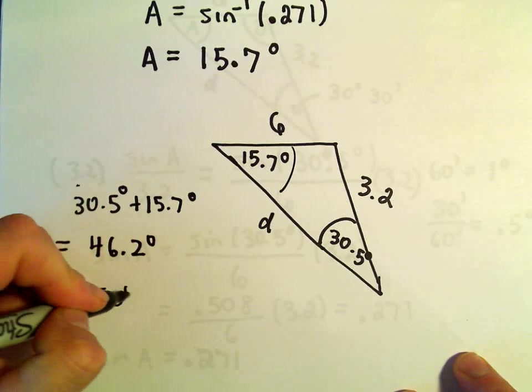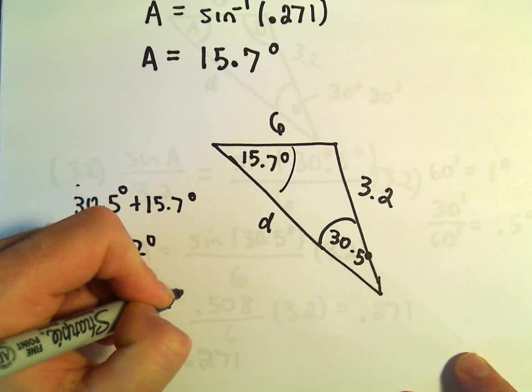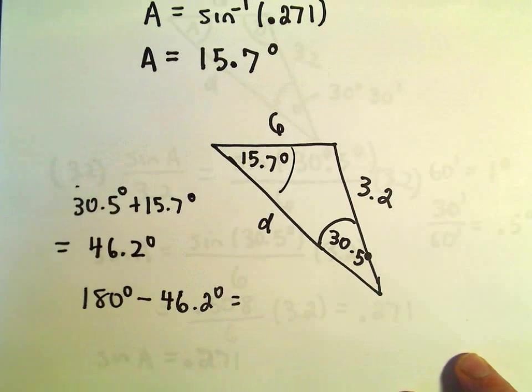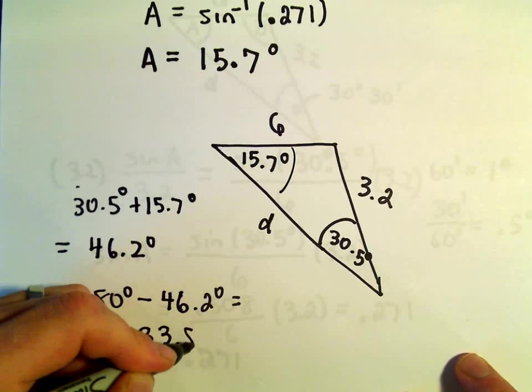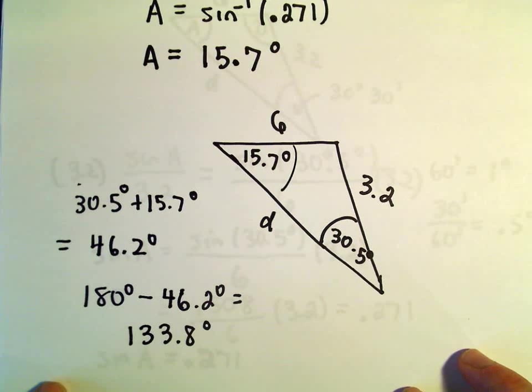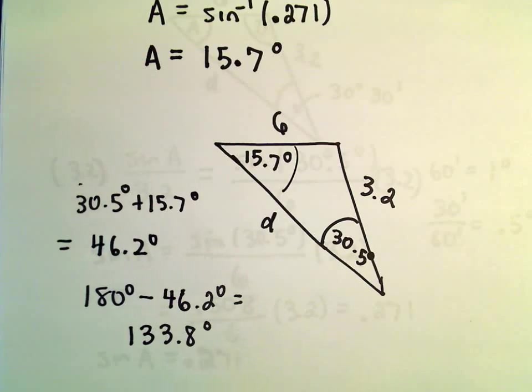that's going to give us 45 and another 1.2, so that'll give us 46.2 degrees. Well, if we take 180 degrees and subtract away 46.2 degrees,